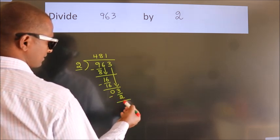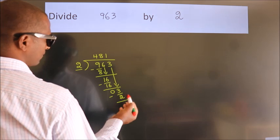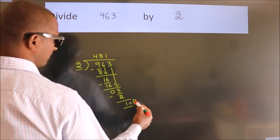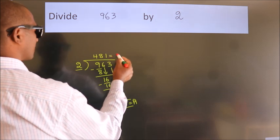After this, no more numbers to bring down. So we stop here. This is our remainder. This is our quotient.